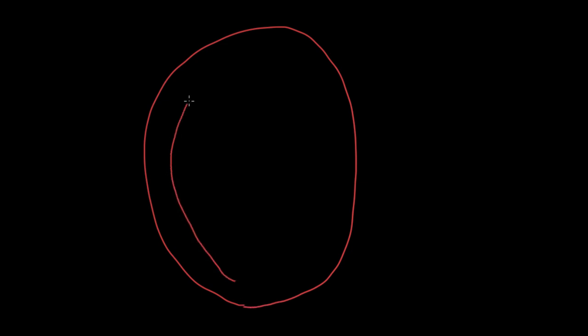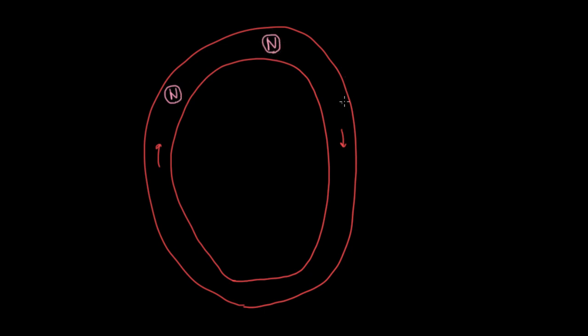Neutrophils circulate in the blood. We're going to draw a little cartoon of blood circulation here — blood circulates in a closed loop. Neutrophils are actually the most common immune cell, and they circulate round and round in the blood, but that's not actually where they do their work.